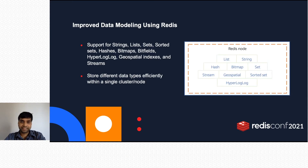Redis supports multiple data structures like strings, lists, sets, sorted sets, hashes, bitmaps, bitfields, hyperloglogs, geospatial indexes, and streams. Depending upon the use case, a microservice can use an appropriate data structure.